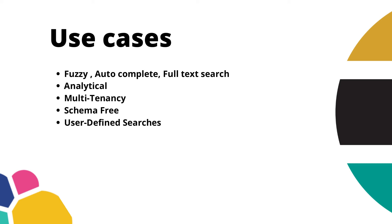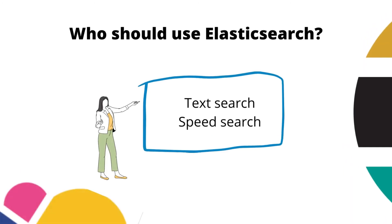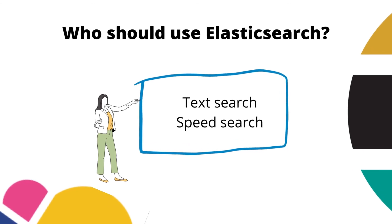Point number five is user-defined searches. In Elasticsearch, users can define and restrict their own searches with the help of aggregation queries or the query DSL to create their own search criteria. If a user wants to search on a particular field they can do so, or if they want to search on the complete document they can do that too. Every search is user-defined in Elasticsearch.